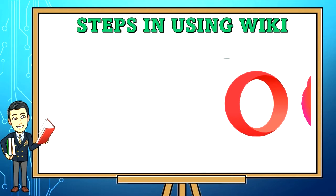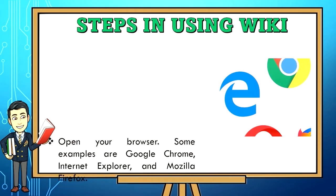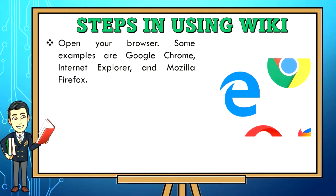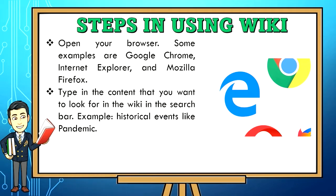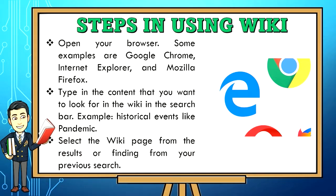Steps in using wiki. Step 1: Open your browser. Some examples are Google Chrome, Internet Explorer, and Mozilla Firefox. Step 2: Type in the content that you want to look for in the wiki in the search bar — for example, historical events like Pandemic. Step 3: Select the wiki page from the results of your search.